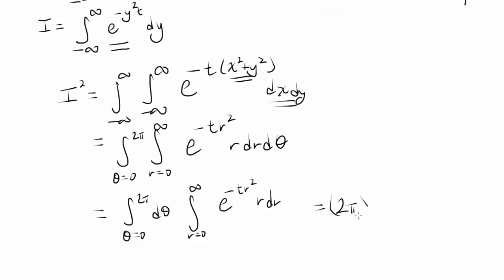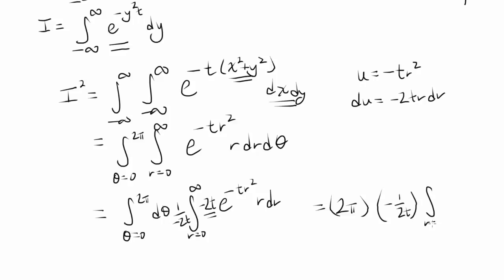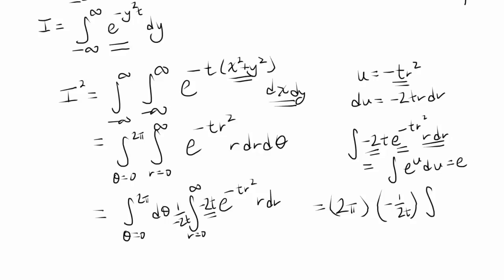We can now break this apart: the integral from theta equals 0 to 2pi of dtheta, and the integral from r equals 0 to infinity of e to the negative t r squared times r dr. The first one is 2pi. For the second, we make the substitution u equals negative t r squared, then du equals negative 2t r dr. So we divide by negative 2t, giving us negative one over 2t times the integral of e to the u du, which equals e to the negative t r squared evaluated from 0 to infinity.